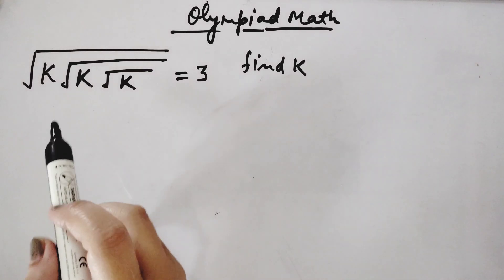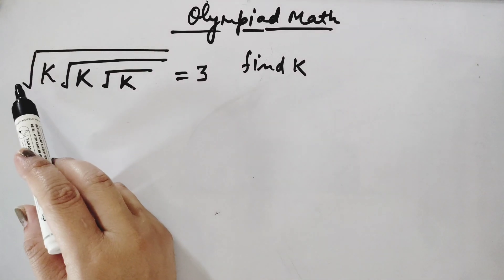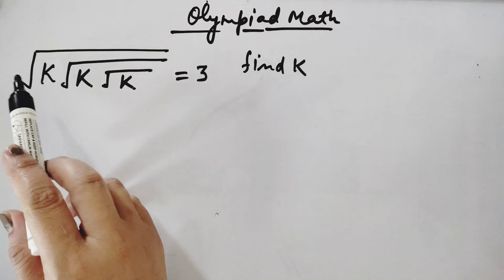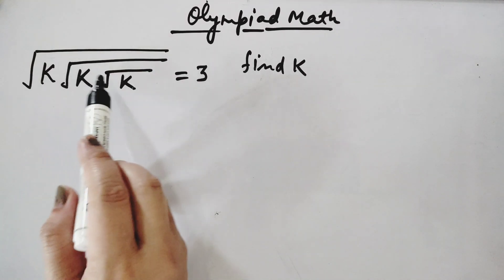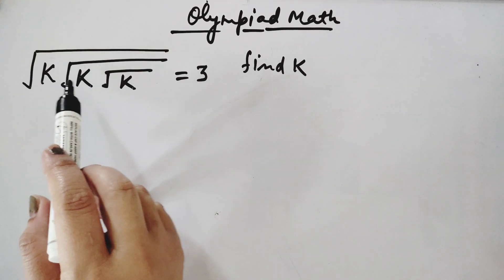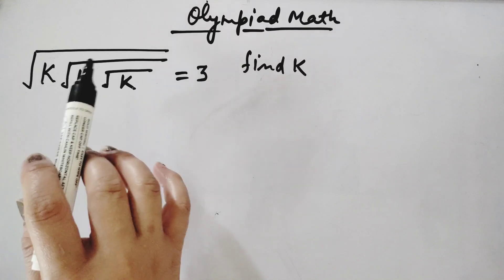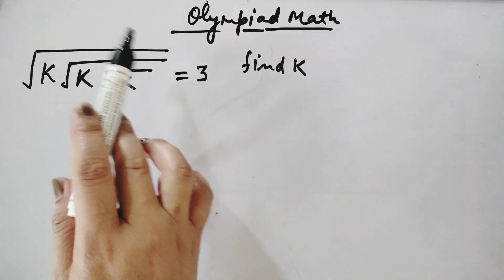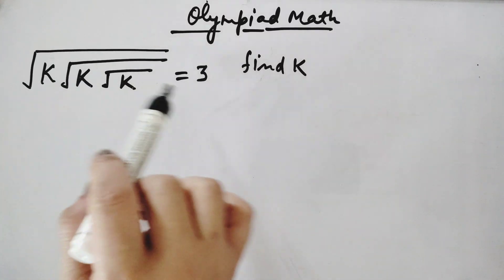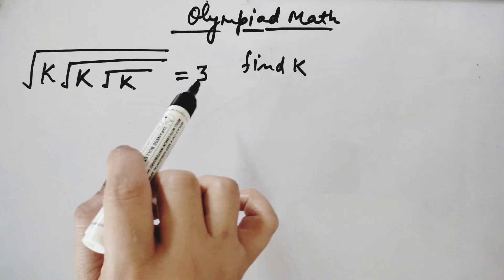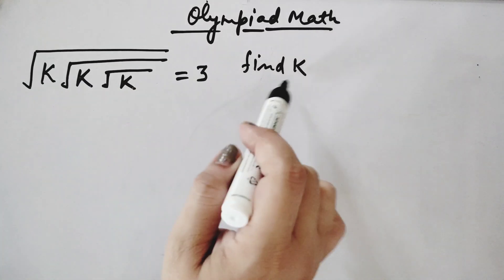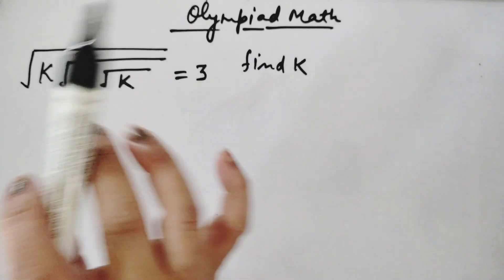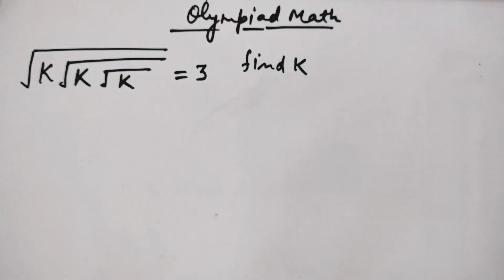You can see there are 3 nested square roots. Inside, the variable is k, and this is the left hand side. The right hand side is given as 3. We need to find the value of k.